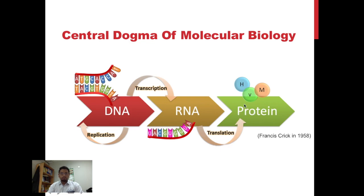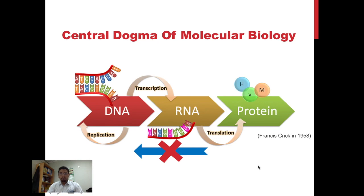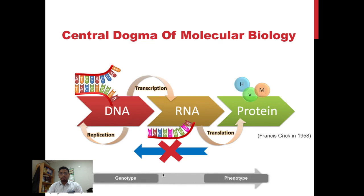Ribosomal machinery produces proteins based on the information written in RNA transcripts, and eventually proteins perform various activities in the cell and determine the phenotype of the cell. According to the model, this whole process is unidirectional and no opposite flow of information is possible. So according to the model, the phenotype of the cell is entirely dependent on its genotype.